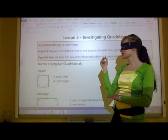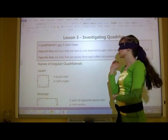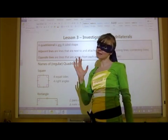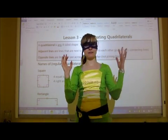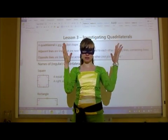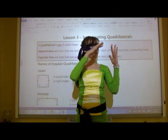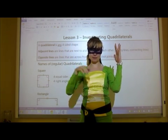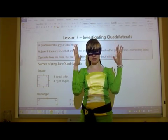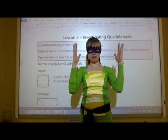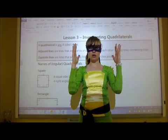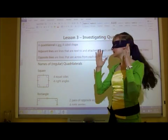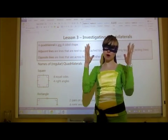Opposite lines are lines that are across from each other and they are not joining lines. So if I have this line and I have this line, and then a line here and a line connecting my elbows — my arms are opposite lines. So: opposite, adjacent.